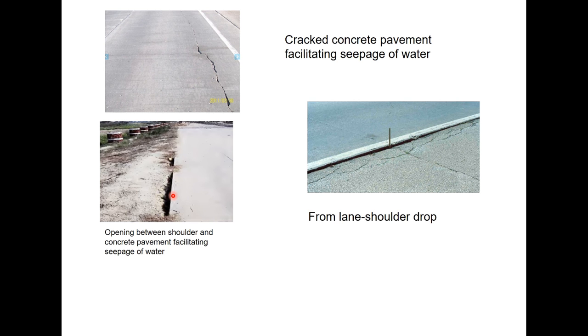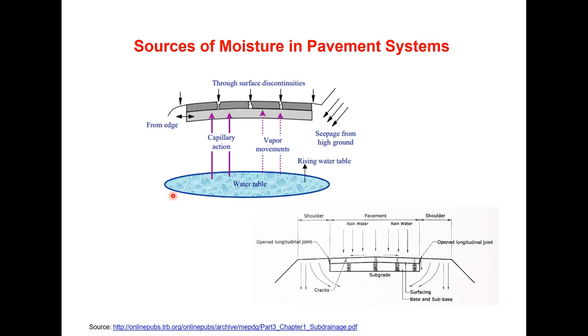As early as 1820 John McAdam noted that regardless of the thickness of the pavement many roads in Great Britain deteriorated rapidly when the subgrade was saturated and the excess amount of water in pavement layers can reduce the service life.